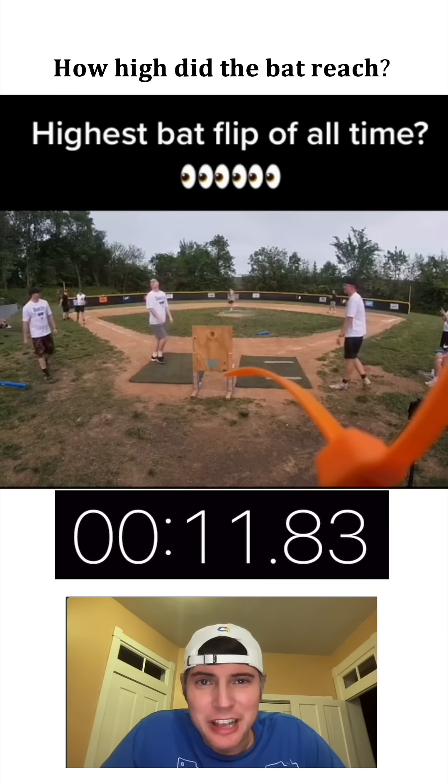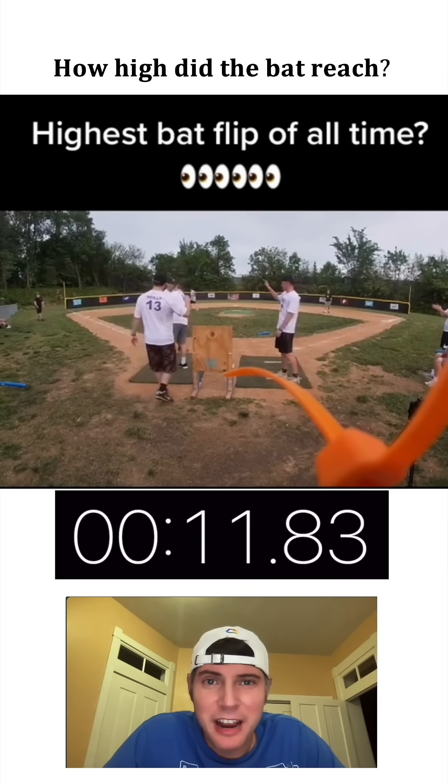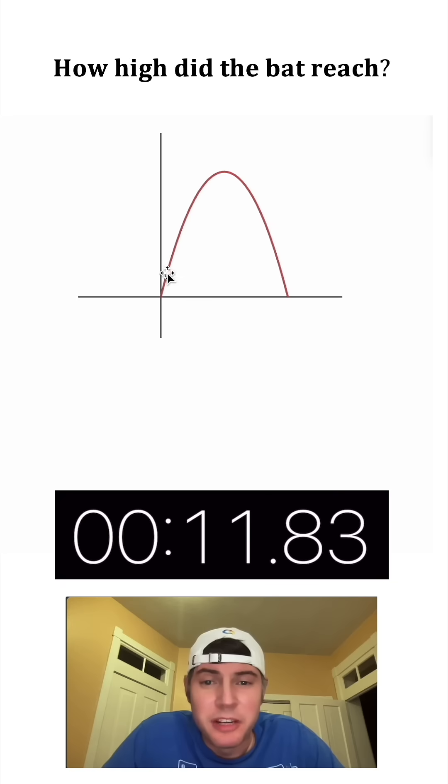And it stays up for 11.83 seconds, so let's figure out how high did the bat reach. We can visualize the path of the bat as a parabola where the horizontal axis can be t for time in seconds and the vertical axis can be h for the height that the bat goes.